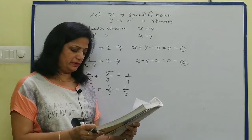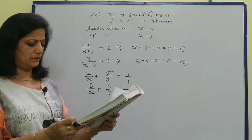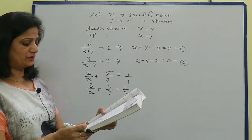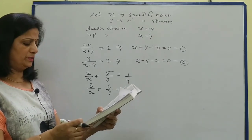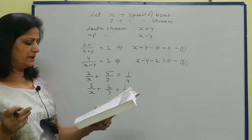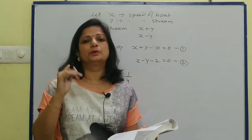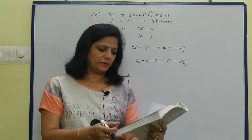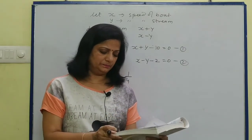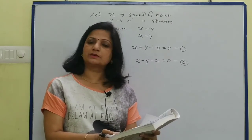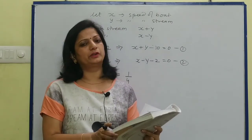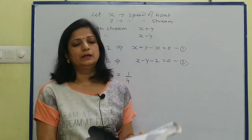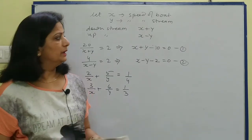Word problem: Ruhi travels 300 km to her home, partly by train and partly by bus. She takes 4 hours. If she travels 60 km by train, assume x = speed of train and y = speed of bus. Using distance upon speed = time: 60 upon x + remaining distance upon y = 4. Form the second equation similarly, then solve.